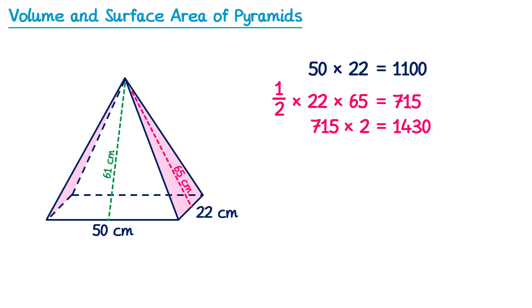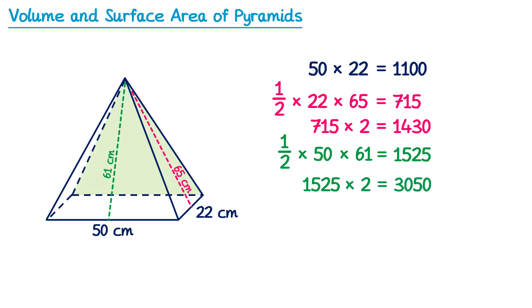Now let's look at the other two triangular faces. This one is one half multiplied by its base, 50, multiplied by its height, 61, giving 1525. That triangular face is the same as the one at the back of the pyramid, so we also double this: 1525 multiplied by 2 is 3050.